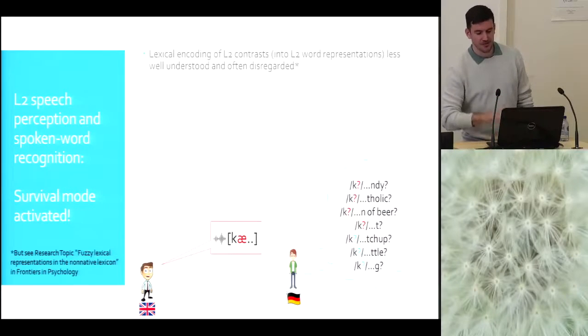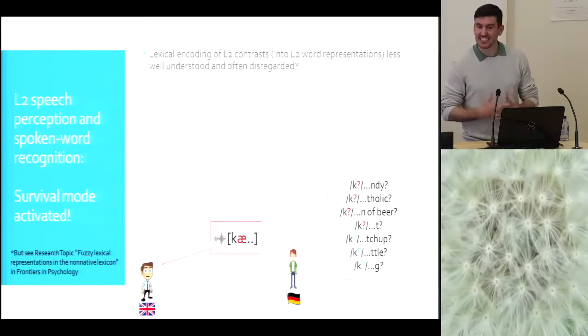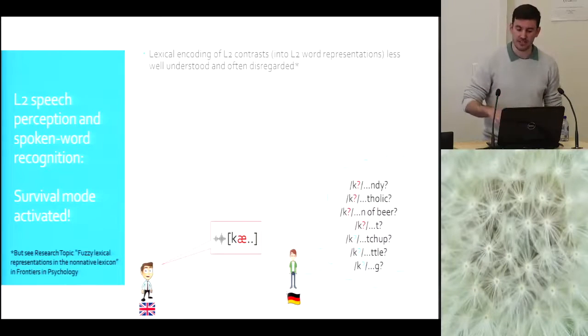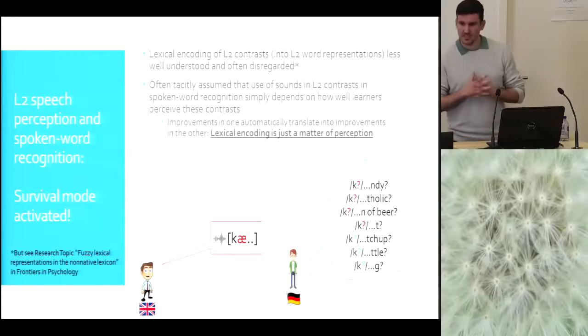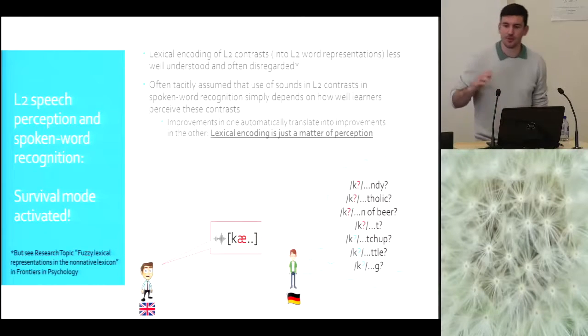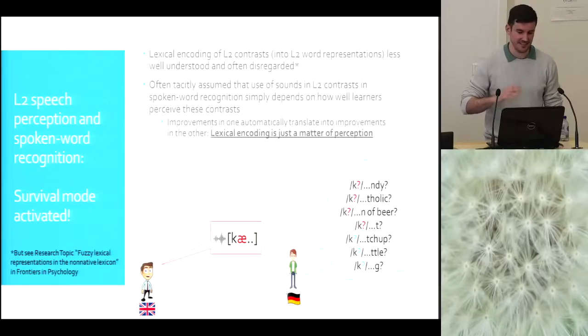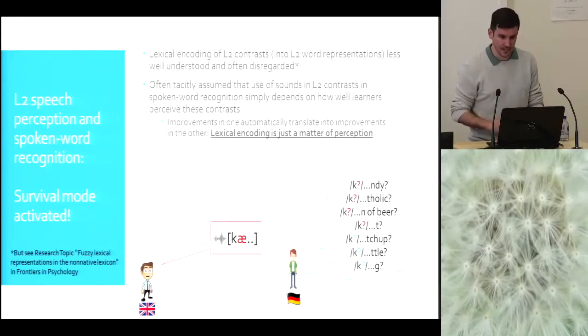By contrast, this other level, the one about what happens with words when you process words in a second language, this lexical encoding of these L2 contrasts into word representations is much less well understood, and sometimes disregarded by some of the literature that's published. I think we and also other people are doing lots of work that do not disregard this aspect. But there's also lots of literature that do not even go there. They stay at the perceptual level.